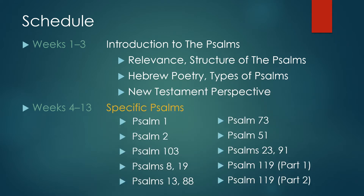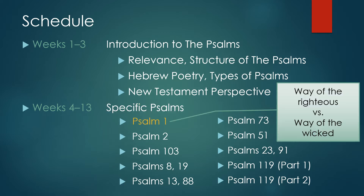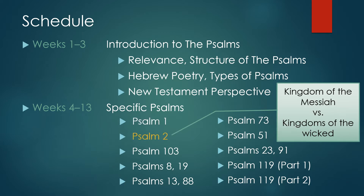After that, we started looking at individual psalms — most of these were done by Henry and a couple by me. We began looking at the foundational psalms, which are Psalms 1 and 2, which really set the tone for the whole book. There are two contrasts: Psalm 1 has the way of the righteous versus the way of the wicked, and Psalm 2 has the kingdom of the Messiah versus the kingdom of the wicked.